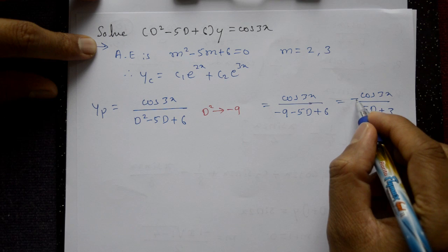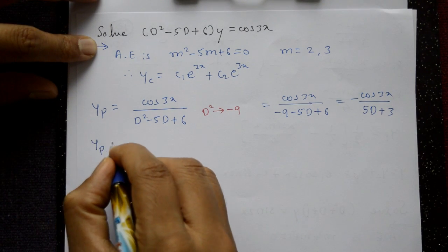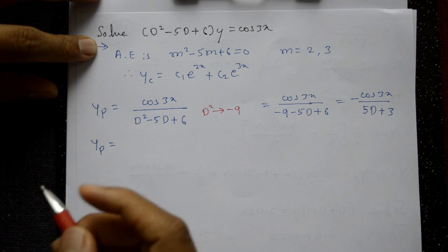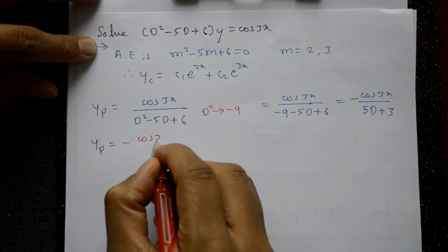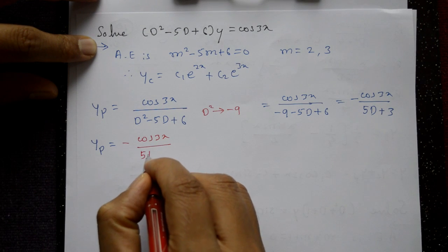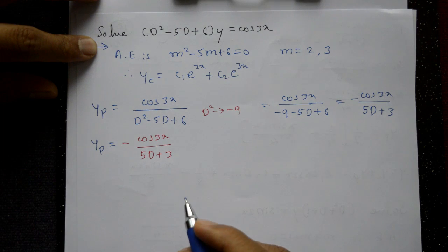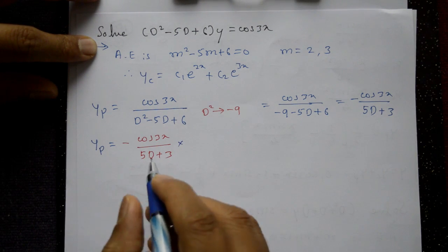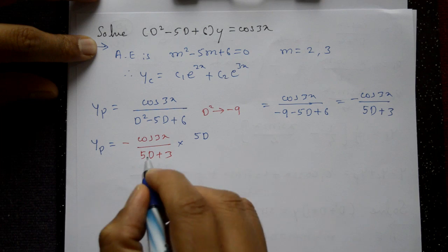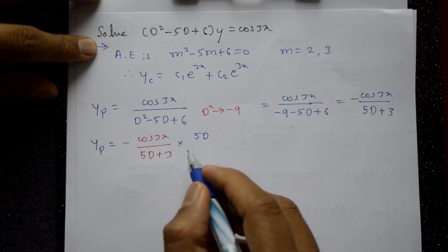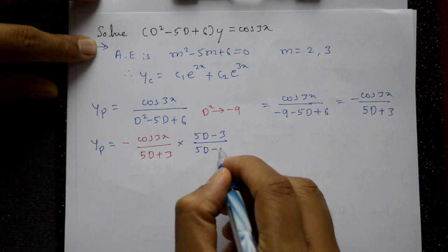Taking minus outside, we get yp = −cos3x / (5D + 3). To rationalize, multiply and divide by (5D − 3) in numerator and denominator, using (a+b)(a−b) = a² − b².